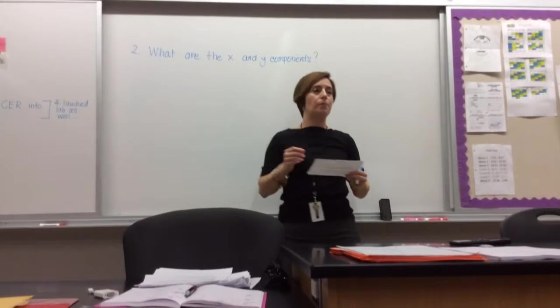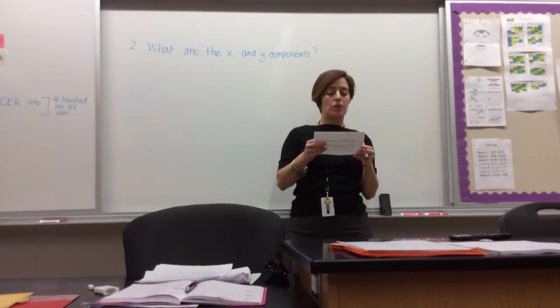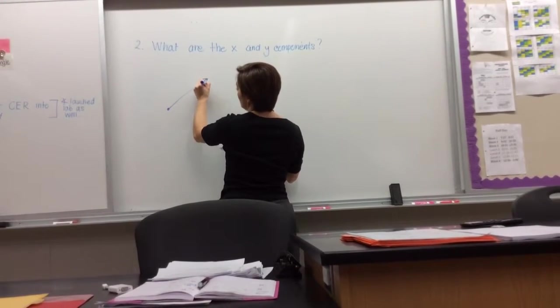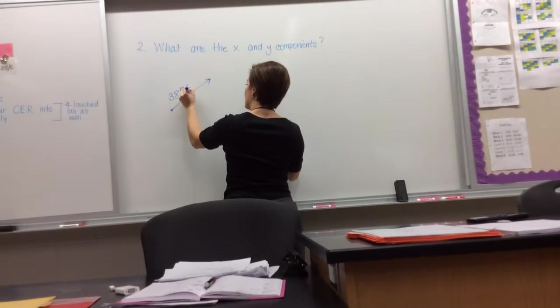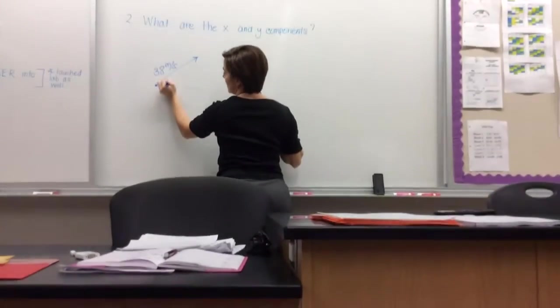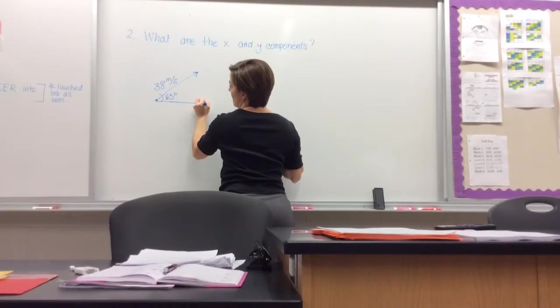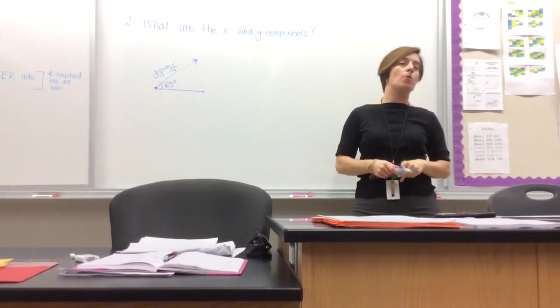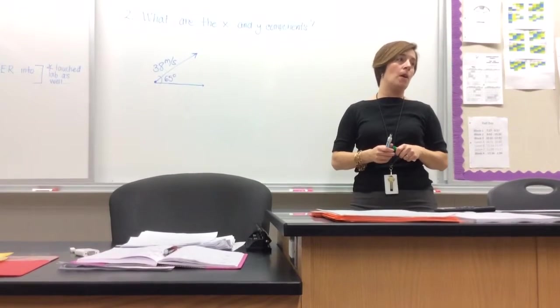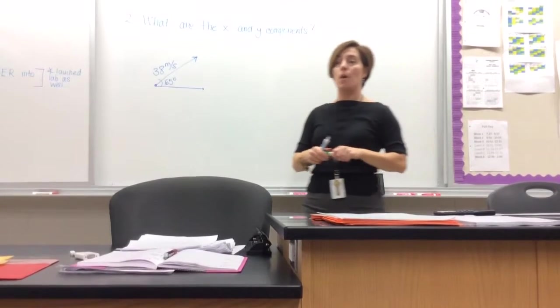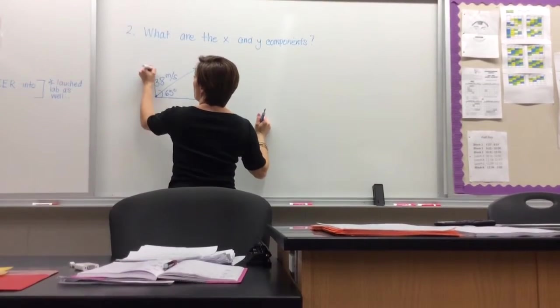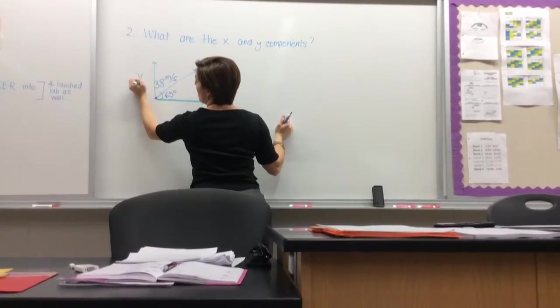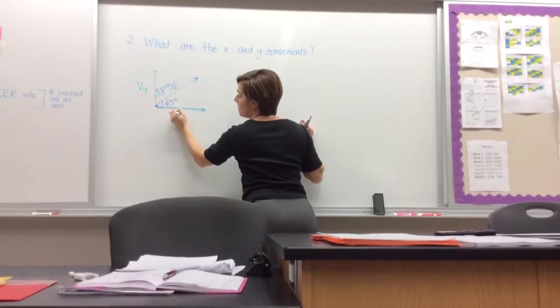For number two, it asks what are the x and y components of the following vector, where v equals 38 meters per second, 65 degrees. So it gives you this idea that this object is launched at 38 meters per second at an angle of 65 degrees. We have to find the velocity component of motion in the y plane and the velocity component of motion in the x plane.